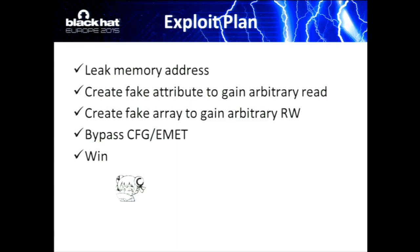To exploit this bug we have several steps. First, since we cannot directly use heap spray in 64-bit Internet Explorer, we need to leak the address of some interesting object. After the leak, we are able to make any kinds of fake attributes. We can achieve arbitrary read by making a fake attribute of uint pointer type. Then we can achieve arbitrary write by making a fake JavaScript int array. With the ability to read and write arbitrary memory, we can set our shellcode, bypass CFG, bypass EMET, and finally get RCE.